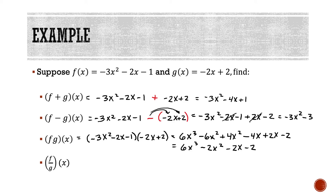Finally, the last problem asks us to do division — f divided by g. We put f on the top and g on the bottom. There's not much I can do to simplify. If I were able to factor the top and cancel with the bottom I would, but in this case the top is not factorable in a way that cancels with the denominator, so we leave it as is.